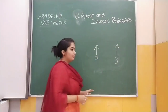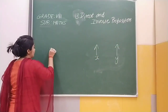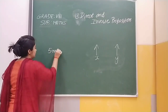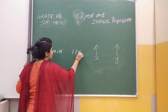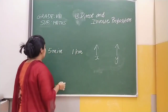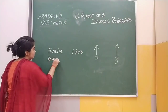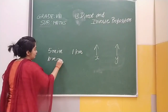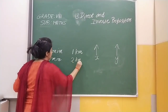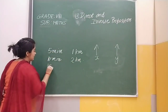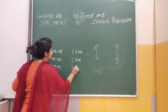For example, we have a car. In 5 minutes, 1 km is running. If we have 10 minutes, then 2 km is running. Now we have 15 minutes, then 3 km is running.